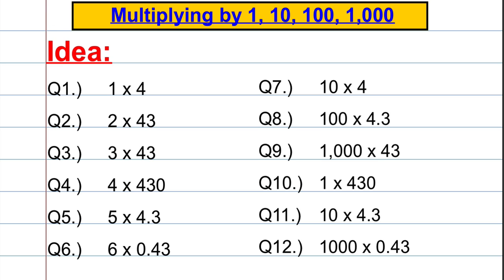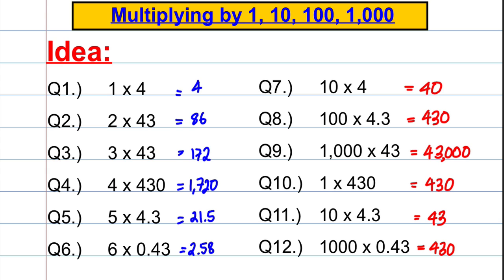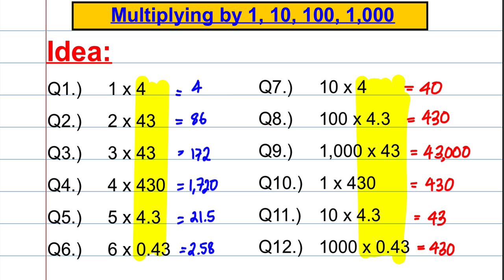Here are the answers to those questions. Do you have any idea what I was trying to demonstrate? If you'll notice — let me get the highlighter — all the same. I was doing a multiplication in both sets of questions, multiplying by four and various combinations: 43, 4.3, 430 and that type of thing.